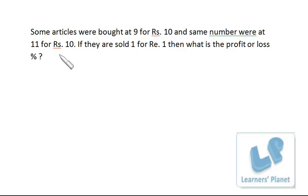For one article, the price is 10 because 9 articles for rupees 10, that means the cost price is 10 by 9. In this case, the cost price is 10 by 11. 11 articles for rupees 10, that means for one you have to pay 10 by 11 rupees.